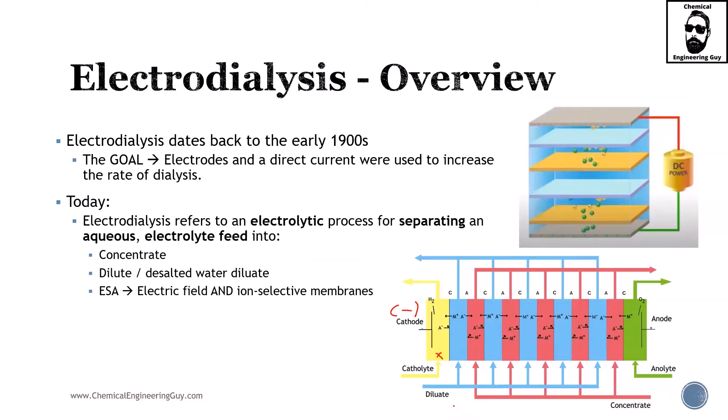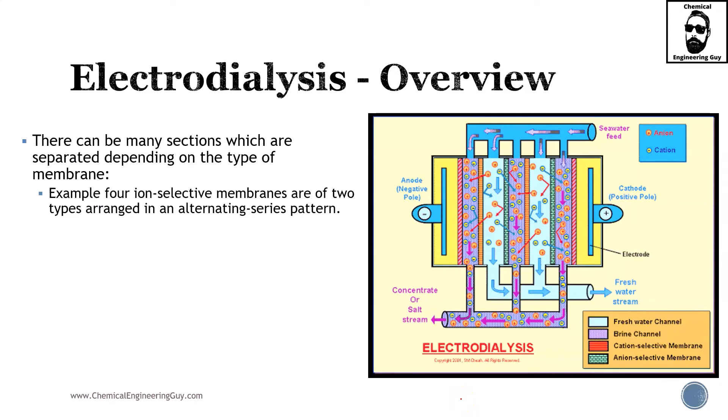Typically, you will have only two of them: the diluate, which is the material which has been diluted or has been losing ions, and the concentrate, which is the original feed that must be removed or decreased in concentration. There can be many sections which are separated depending on the type of membranes.